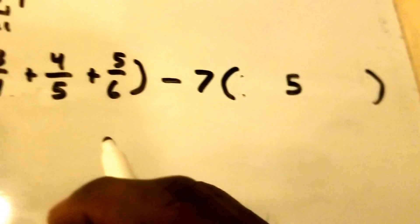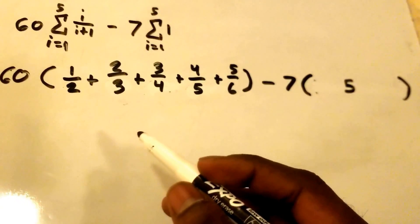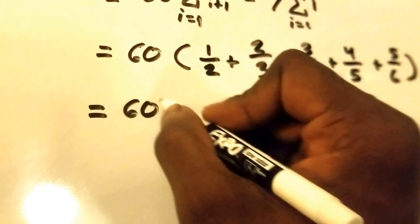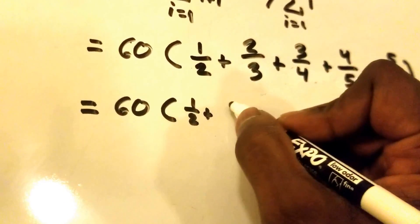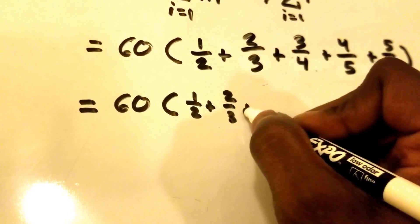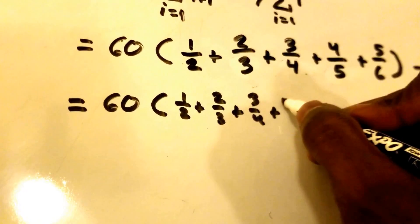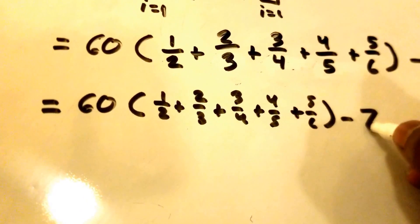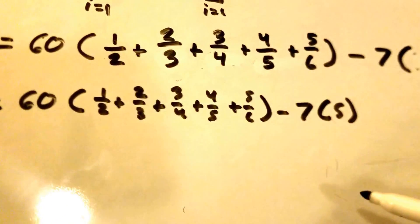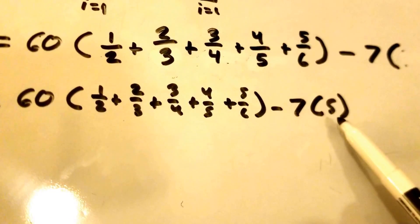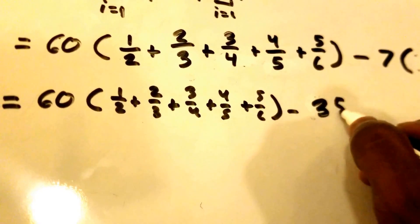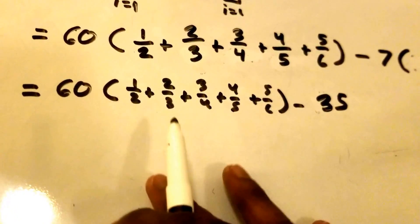So we replace that with 5. Let's rewrite this: we get 60 times the quantity 1 half plus 2 thirds plus 3 fourths plus 4 fifths plus 5 sixths, minus 7 times 5. And 7 times 5 is just 35, so we replace that with 35.